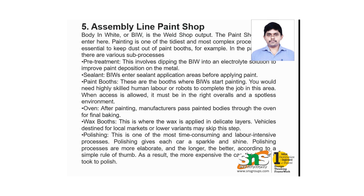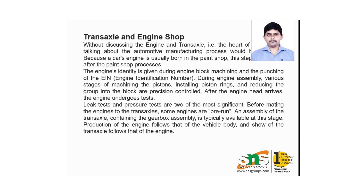The assembly line involves a flow of production process ensuring an aesthetic look. There are paint booths, and an electrolyte solution is used for paint deposition to avoid corrosion. After painting, the body passes through an oven for final baking. Wax coats are applied over the delicate layers. Polishing is one of the most time-consuming and labor-intensive processes, giving each car a sparkle and shine, making it more expensive overall.